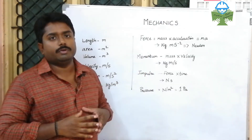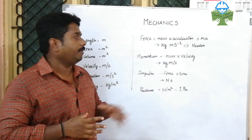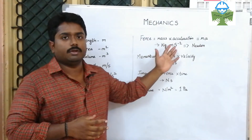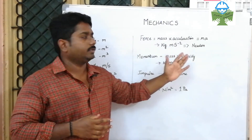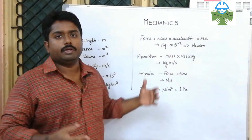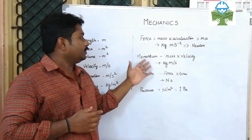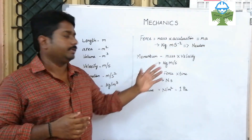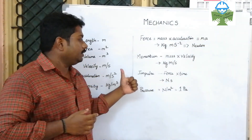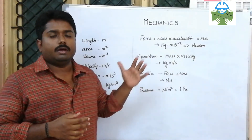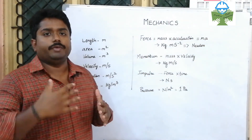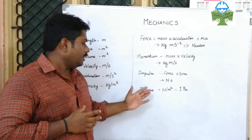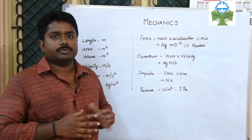Force-related units: force equals mass times acceleration, which is kilogram meter per second squared, equal to one newton. Momentum is mass into velocity, that is kilogram meter per second. Impulse is force into time, in newton-seconds. Pressure is newton per meter squared.